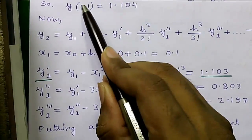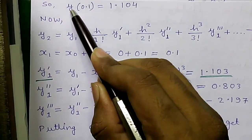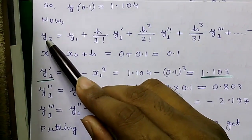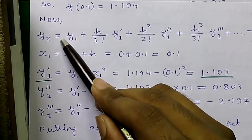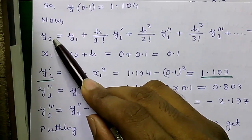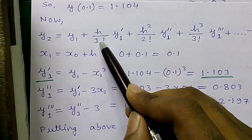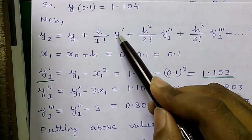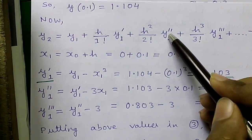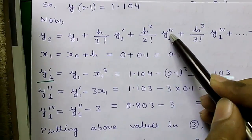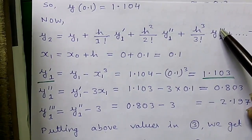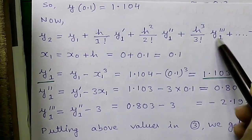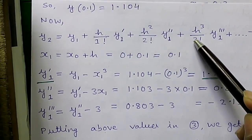The meaning of this is: for x = 0.1, y = 1.104. For the second iteration all the y subscripts are incremented by 1. So the formula becomes y₂ = y₁ + (h/1!)·y'₁ + (h²/2!)·y''₁ + (h³/3!)·y'''₁. The h values and factorial values remain the same — this is formula number 3.